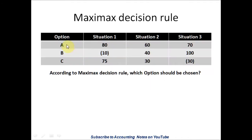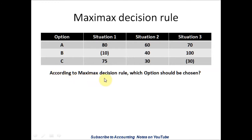We have this exercise in which we have three options — Option A, Option B, and Option C — with three situations. The positive numbers are the profits, and the negative numbers are the losses. According to the MaxiMax Decision Rule, which option should be chosen?